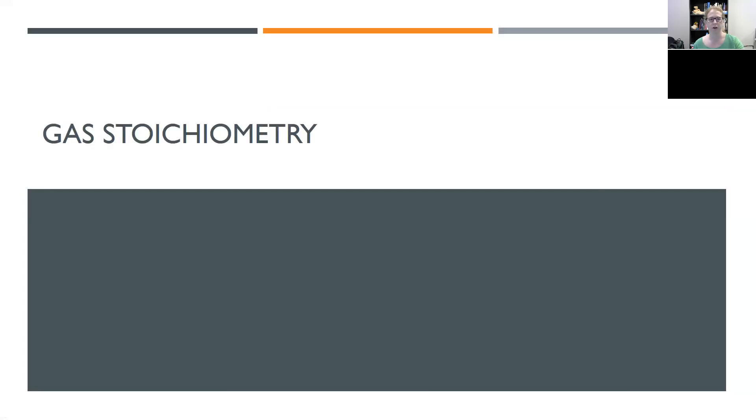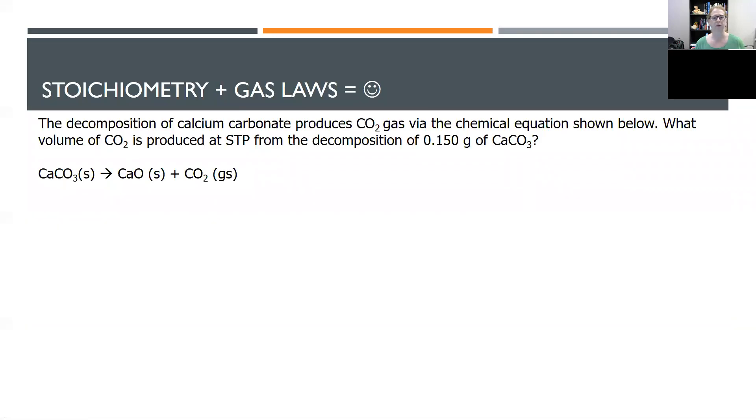In a previous video, we took a look at the ideal gas law. And one of the things that we saw was that PV equals nRT was a good tool to use in a problem if we were looking for moles of gas. Well, another situation where we've looked for moles of things over this semester is stoichiometry problems. And so what I want to think about is the fact that stoichiometry and gas laws are a match made in heaven. They're a really good thing together. So let's try a few problems.